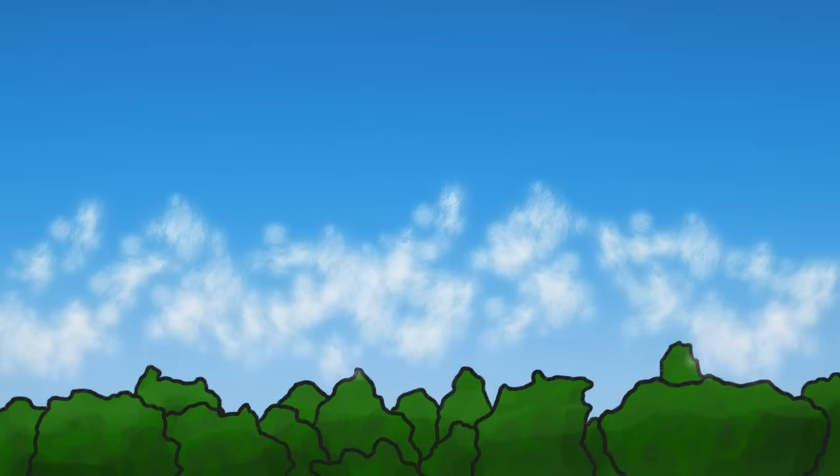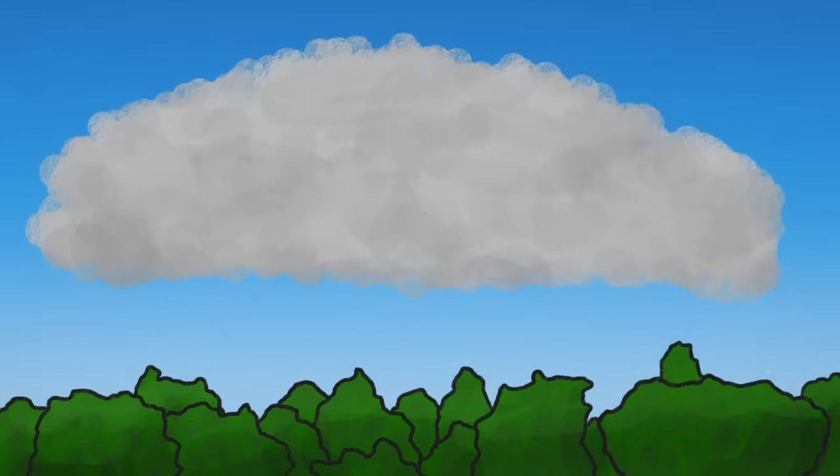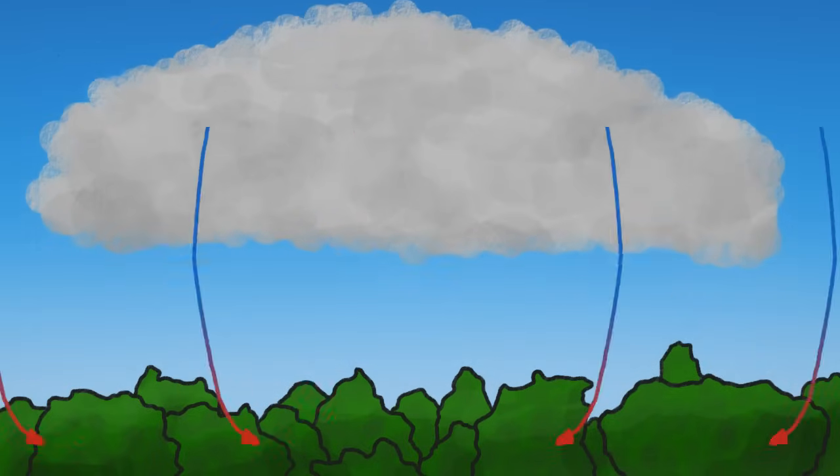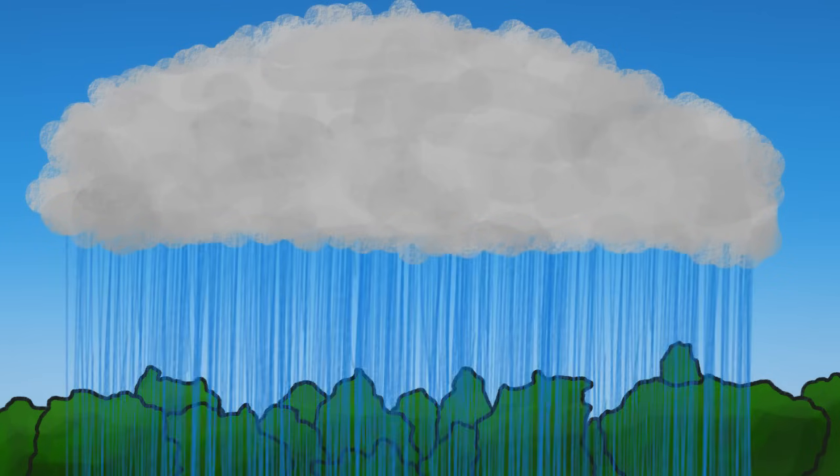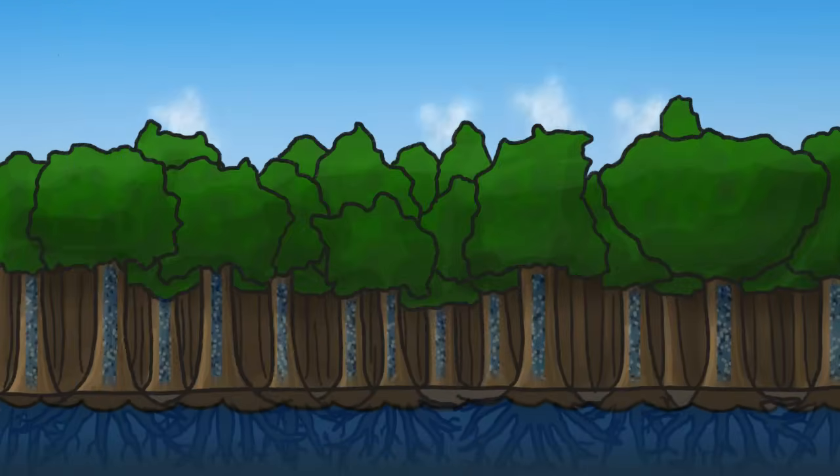All that water vapor rising from the forest feeds moisture-laden clouds while also causing convection. Together, these effects accelerate the formation of rain, which falls to the soil and gets taken up all over again.